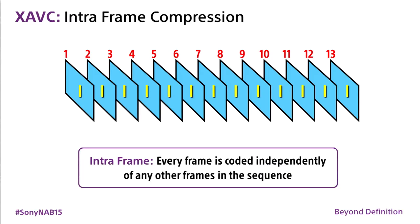Just to remind you — because we're going to go a little technical — when we say intra-picture compression or intra-frame compression, it means the algorithm is compressing frame by frame independently. There is no communication, no crosstalk between the different frames. It's intra-frame compression.